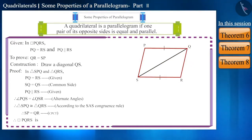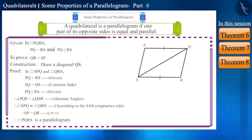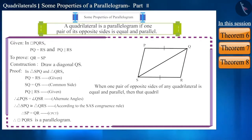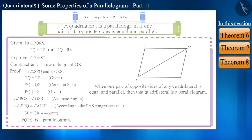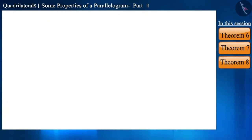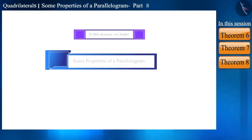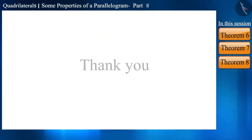Therefore, quadrilateral PQRS is a parallelogram. That is, if a pair of opposite sides of any quadrilateral is equal and parallel, then that quadrilateral is a parallelogram. Friends, that's all in this session. We learned some properties of a parallelogram. See you in the next video where we will solve some questions related to this topic. Thank you.